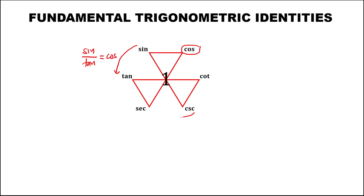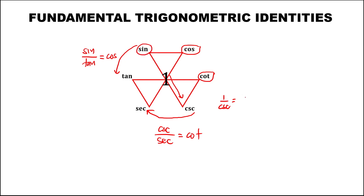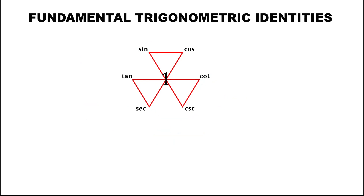Then if we have cosecant over secant, that is equal to the function before them, which is cotangent. Then if we have 1 over cosecant, that equals sine. Then for tangent over secant, the function before them is sine.